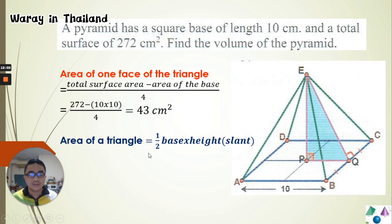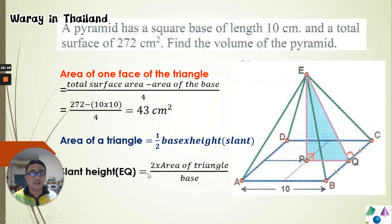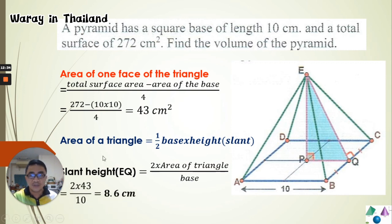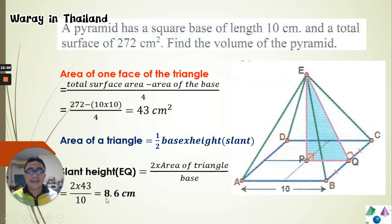Now we use the area of one triangular slant face to find the slant height EQ. The area of a triangle equals one-half × base × slant height, so slant height = 2 × area ÷ base. Substituting: slant height EQ = (2 × 43) ÷ 10 = 86 ÷ 10 = 8.6 centimeters.